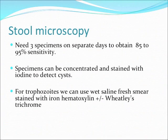In order to have better sensitivity, it's recommended to have three specimens on three different days. If you do that, you will have a sensitivity of 85 to 95%. You can also concentrate the sample by centrifugation for bigger sensitivity. For trophozoites, it has to be a fresh sample — you take a little bit of stool, put it on saline, and you can see the trophozoites. You can stain them with iron hematoxylin or Wheatley's trichrome.